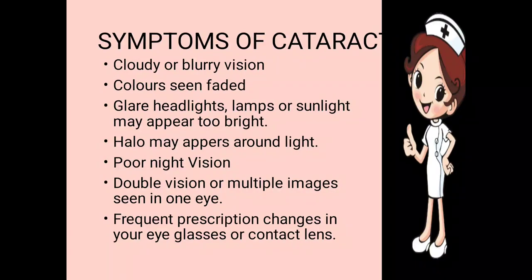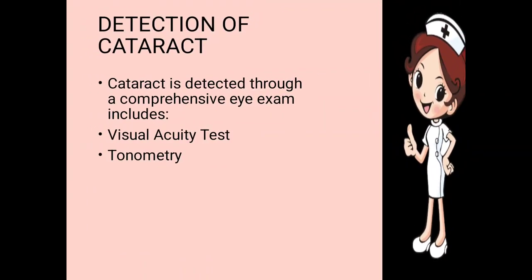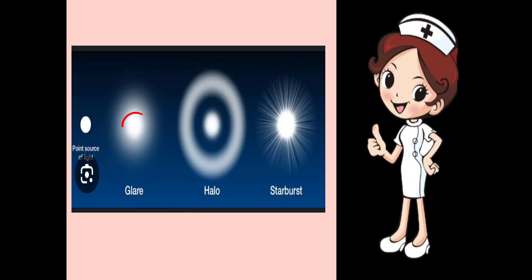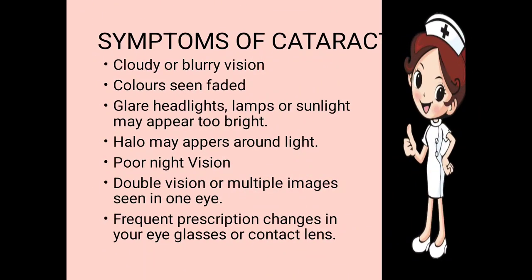Clear headlights, lamps, or sunlight may appear too bright. Glare may be seen around lights, and a halo may also be seen around lights in case of cataract. Sunlight or lamps appear too bright, so the patient will not go outside in the afternoon because these things disturb the cataract patient.